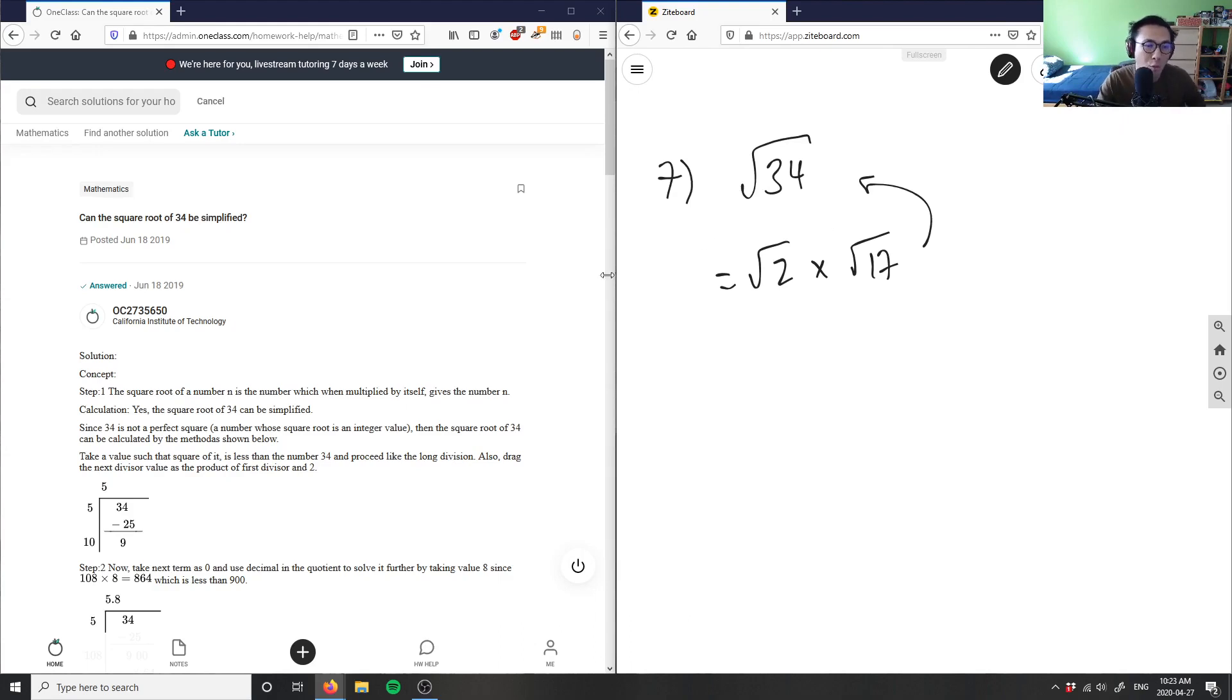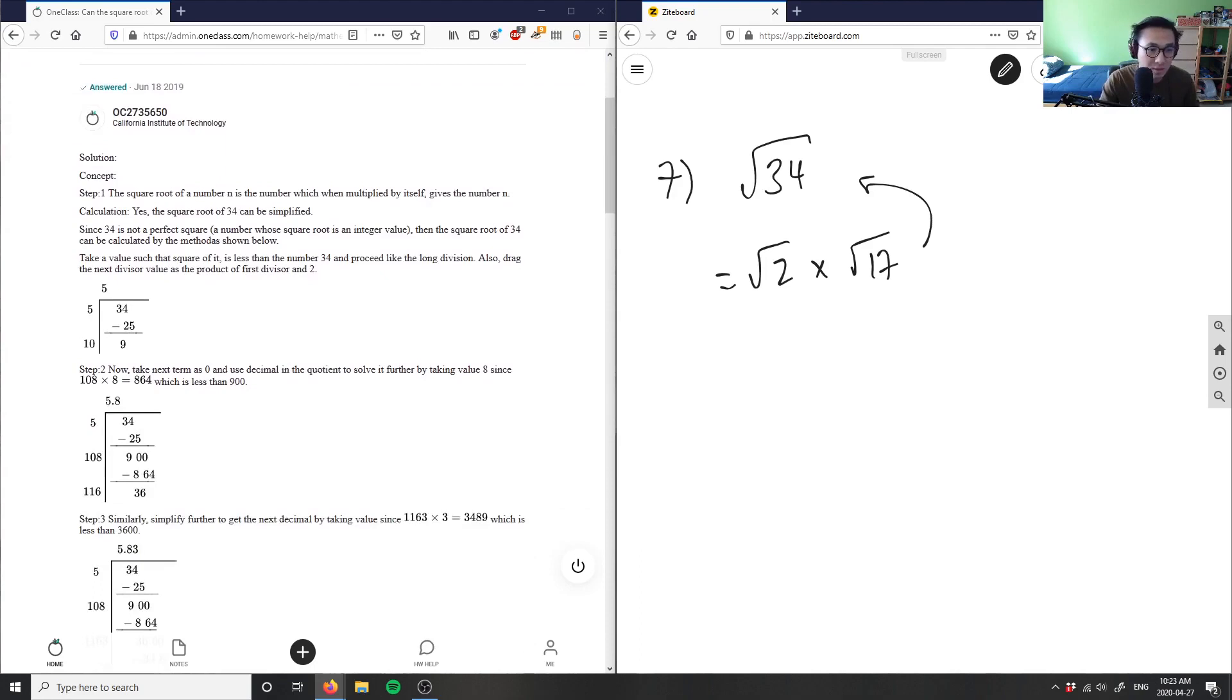But what I think the student did was they actually calculated what the exact value of square root 34 is. What we could do is use a calculator and solve for this. Root 34 would equal about 5.83, and that's what they're doing here using the concept of long division to figure out what the square root of 34 is.